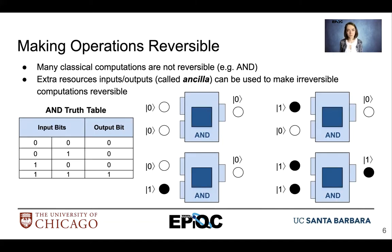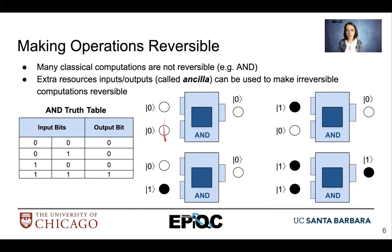How do we make irreversible functions reversible? We can add extra resources — we'll call those Ancilla — to make irreversible functions reversible. Here we have the AND truth table that tells us what our single output bit will be from our two input bits. The output of the AND operation equals one if and only if both input bits are equal to one. We only get an output of one if both inputs are equal to one, or if we have two black balls entering the gate, we get a black ball output.